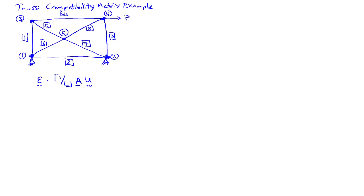So the compatibility matrix is A, and it's the matrix that if I multiply into the nodal deflections of the truss, it gives me the change in lengths of the bars. If I multiply by the diagonal matrix of one over the bar lengths, I get the strains in the bars.